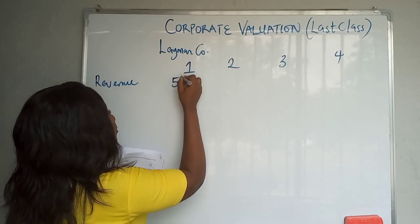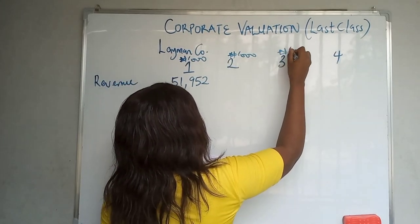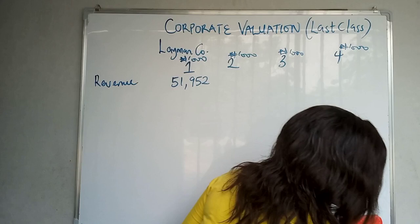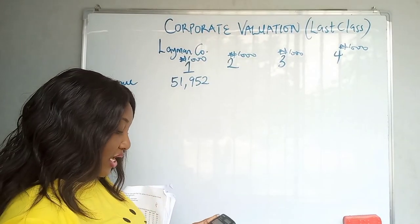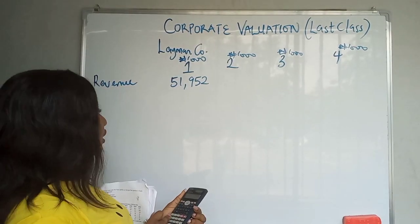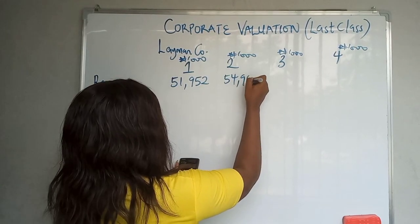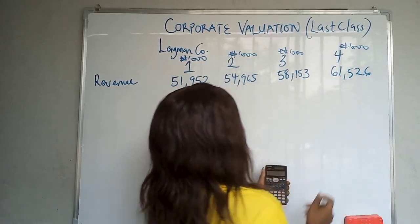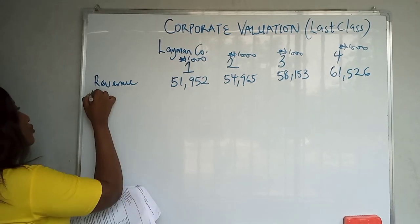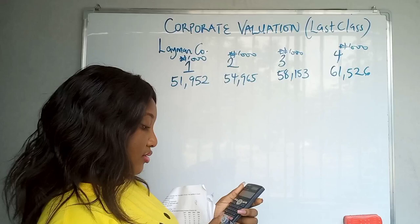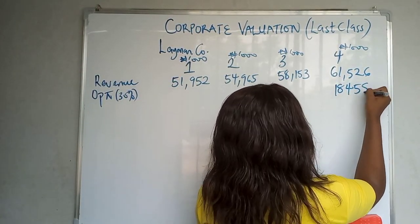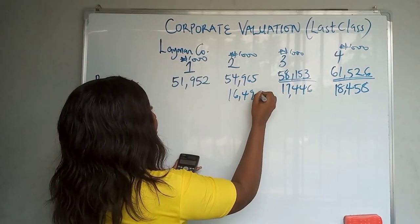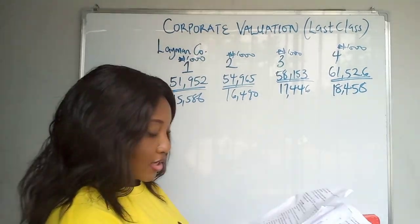Revenue in year one is 51 million, 952 thousand. After the first year, the growth rate is 5.8%, so multiply by 1.058: year two gives 54,965; multiply again by 1.058 for year three: 58,153; and year four: 61,526. Operating profit margin is 30% for the foreseeable future, so calculate 30% of each: year one 18,458; year two 16,490; year three 17,446; year four 15,586.